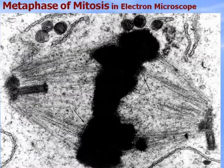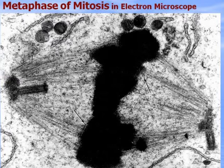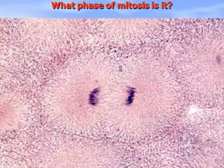This is the metaphase of mitosis visible in the electron microscope. Chromosomes are located in the equatorial plate. Cell centers consist of two centrioles at the poles, and the mitotic spindle microtubules are connected to chromosomes. What phase of mitosis is it? It is late anaphase or telophase.